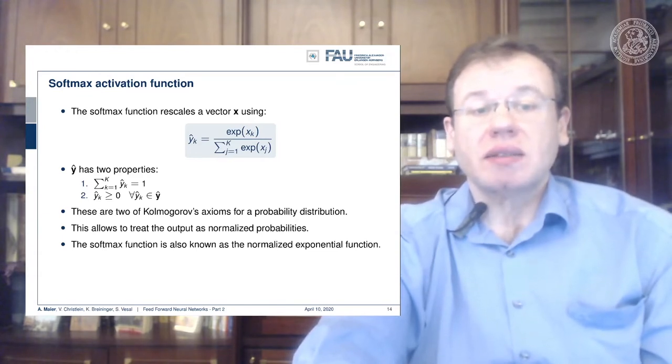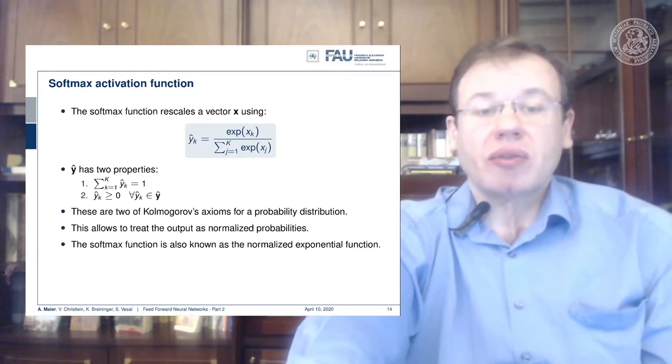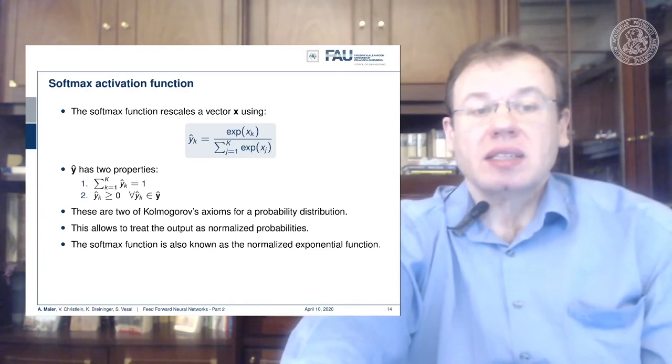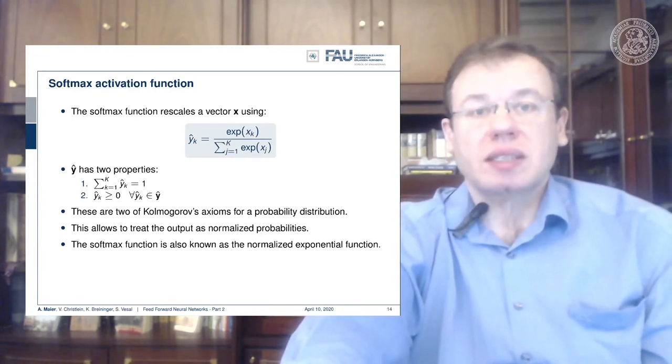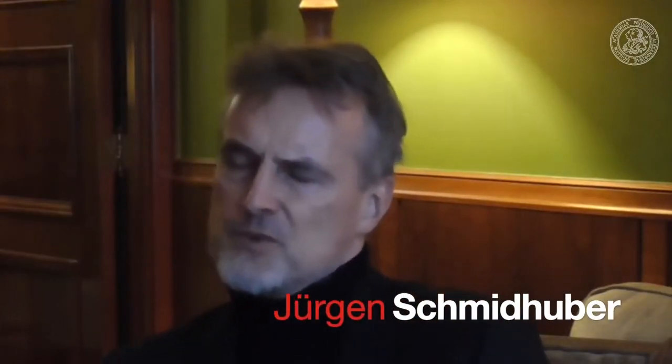This is very nice because these are two axioms of the probability distribution introduced by Kolmogorov. This allows us to treat the output of the network as probabilities. That was my 1987 diploma thesis.